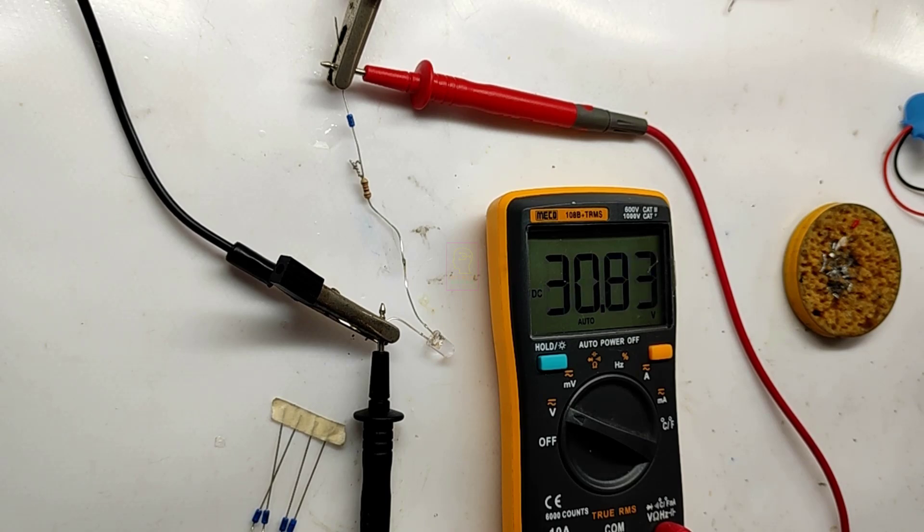The voltage has become 30 and still the LED has not lit up yet. You can see at 33 volts the breakdown has happened and the LED has lit up. We will reduce the voltage now and see at what voltage the DIAC will disconnect the breakdown.